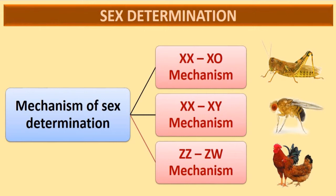In male heterogamety, there are two mechanisms: XX/XY and XX/X0. In the XX/X0 mechanism, the male is heterogametic — producing gametes with X and gametes without X (represented as 0) — while the female is homogametic (XX). An example is many insects such as grasshoppers. In the grasshopper, the male is 22 autosomes plus X0, and the female is 22 autosomes plus XX.